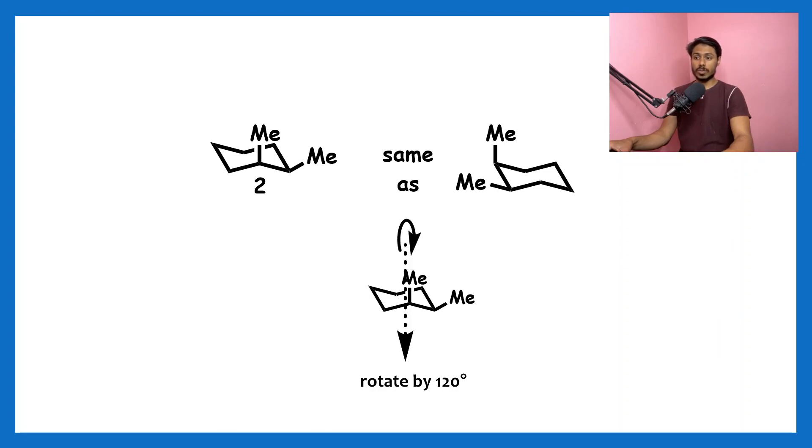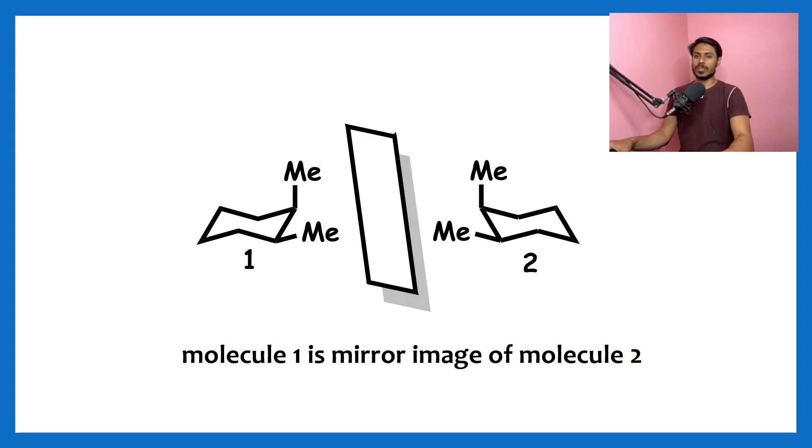...vertical axis shown in the picture, you will get that molecule. That molecule is very interesting because if you look carefully, it is actually the mirror image of molecule one. So what we get after flipping molecule one is actually its mirror image, and these two are enantiomers of one another.